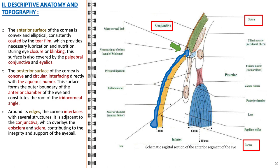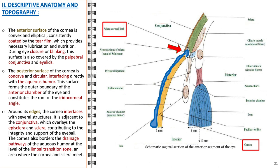Around its edges, the cornea integrates with several adjacent ocular structures. It is closely related to the conjunctiva, which itself lies over the episclera and sclera. This relationship not only reinforces the structural integrity of the eye but also plays a role in the immune defense of the ocular surface. The cornea also borders the drainage pathways of the aqueous humor at the level of the limbal transition zone, an area where the cornea and sclera meet. This zone is essential for maintaining the balance of fluid within the eye.